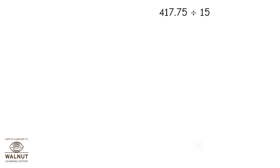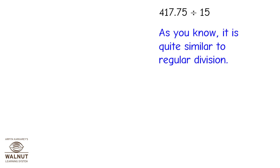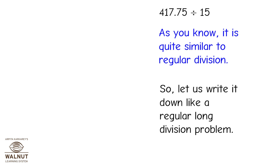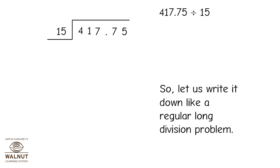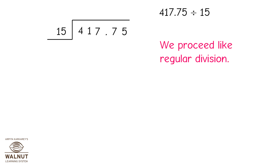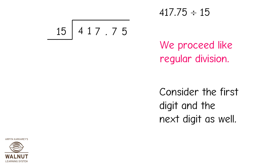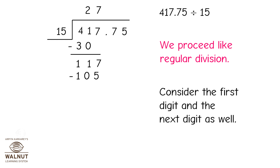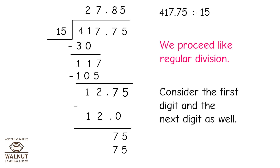417.75 divided by 15. As you know, it is quite similar to regular division, so let us write it down like a regular long division problem. We proceed like regular division as well. We consider the first digit as it is less than the divisor, then take the next digit as well. This is the answer.